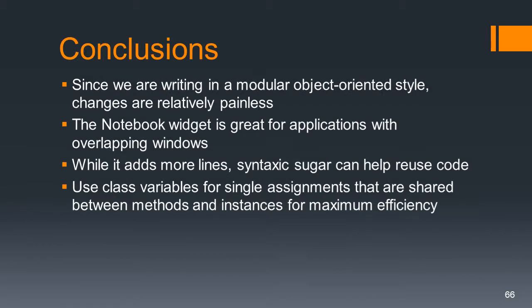In conclusion, since we've been writing in a modular object-oriented style, the changes were actually relatively painless — the design work was the tricky part. The notebook widget is great for applications with overlapping windows, so don't be afraid to use it; it's actually quite simple. While syntactic sugar adds more lines, it can really help you reuse code. And class variables, even though quite simple to use, are great for single assignments shared between methods and instances — they're the way to go for maximum efficiency.